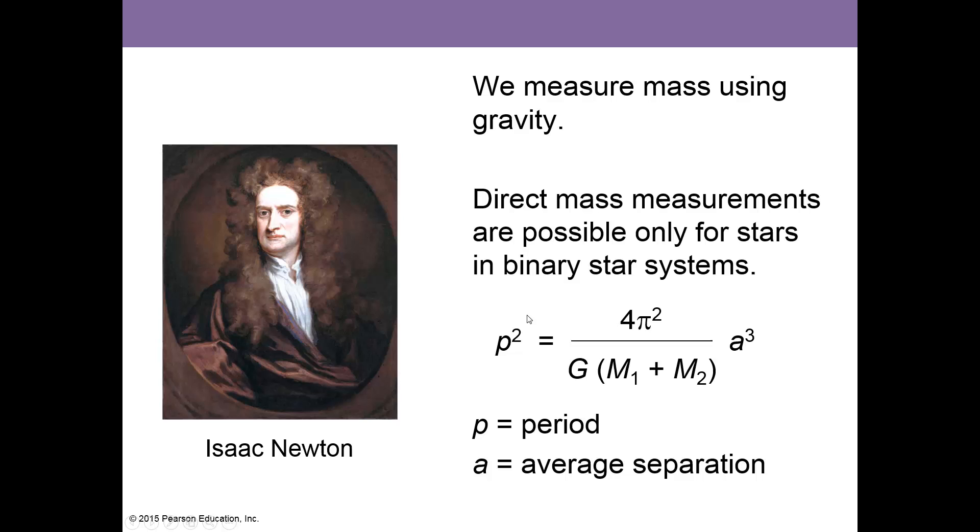Don't worry about this equation here, just to point out this is how we measure mass with gravity. Direct mass measurements are possible only for stars in binary systems. An eclipsing binary star is the best way we have to measure a star's mass. You can see here the mass of one star plus the mass of another star, with gravity thrown in, size of orbit, and the period of the orbit—how long it takes to orbit. All that put together, we can figure it out.